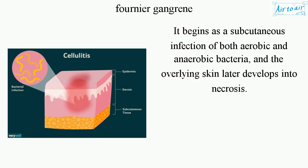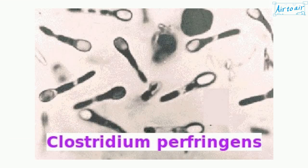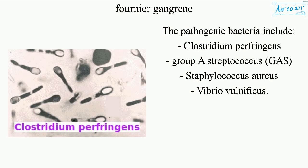It begins as a subcutaneous infection of both aerobic and anaerobic bacteria, and the overlying skin later develops into necrosis. The pathogenic bacteria include Clostridium perfringens, Group A Streptococcus, Staphylococcus aureus, and Vibrio vulnificus.